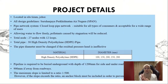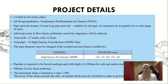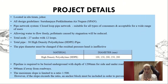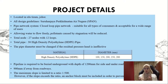As a requirement, the pipeline must be buried underground at a depth of 1.2 meters for the site and under roadways. If away from roadways, the pipeline must be buried below 0.9 meters underground. If there is any slope, the maximum slope is limited to a ratio of 1 to 500. If the slope exceeds this ratio, we must use an anchor block to prevent sliding.